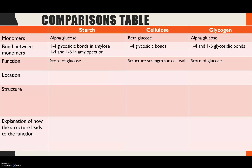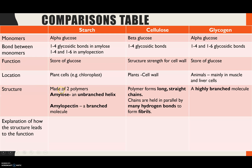For function: starch and glycogen are stores of glucose, whereas cellulose provides structural strength in the cell wall. For location: starch is found in plant cells, for example inside chloroplasts; cellulose is in plant cell walls; glycogen is found in animals in muscle and liver cells. For structure: starch is made of two polymers of alpha glucose — amylose, which is an unbranched helix due to only 1 to 4 bonds, and amylopectin, which is branched due to the 1 to 6 bonds. Cellulose consists of long straight chains held in parallel by many hydrogen bonds to form fibrils. Glycogen is highly branched, even more so than amylopectin, because it has more 1 to 6 glycosidic bonds.